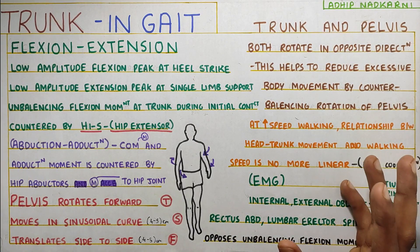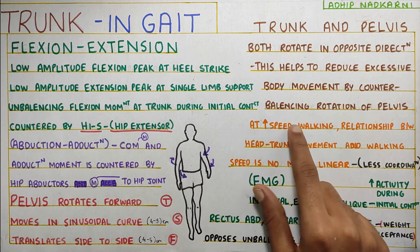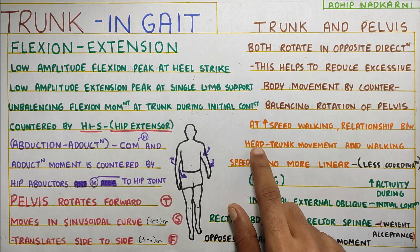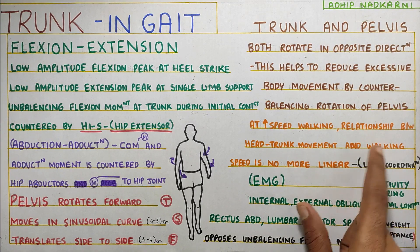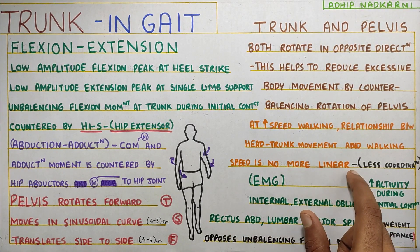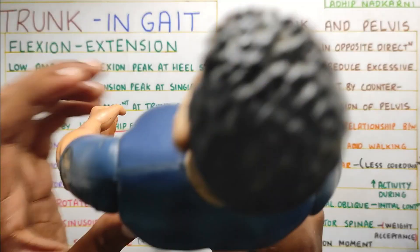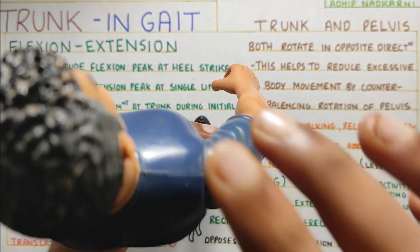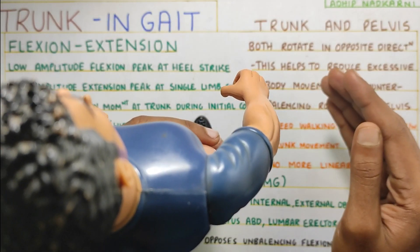At high speed of walking, the relationship between head and trunk movement and walking speed is no longer linear. That means as you keep increasing your speed of walking, the coordination between your trunk and the lower limb keeps reducing after a certain point.